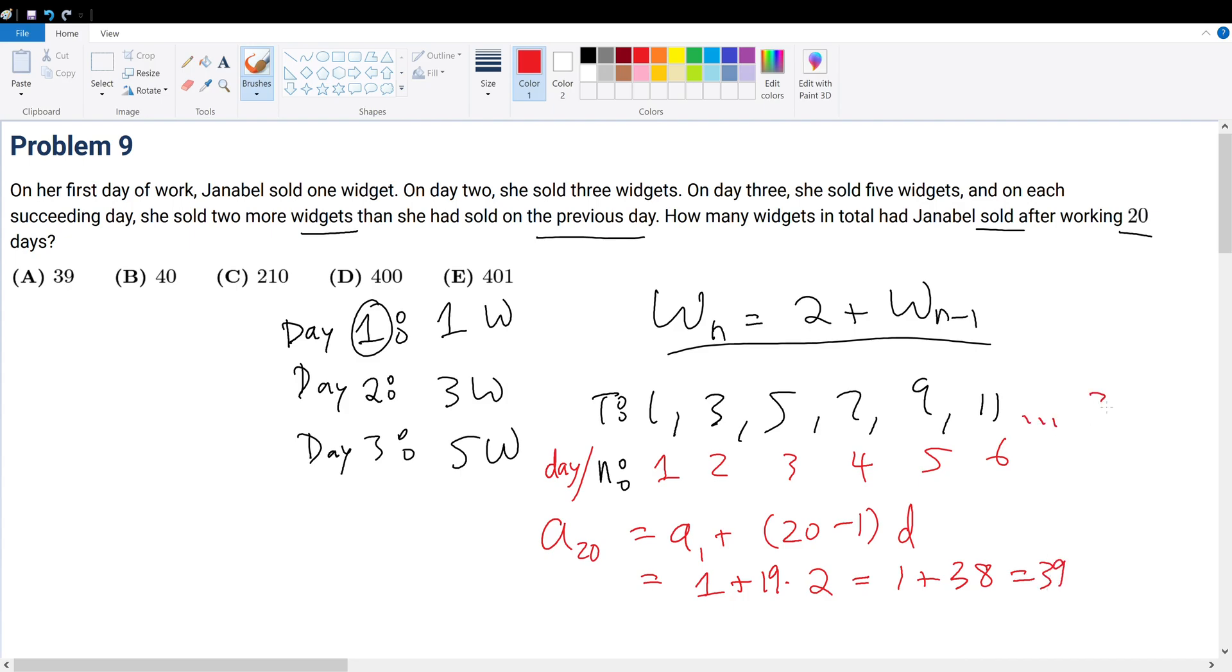This goes on until 39, and this goes on until number 20. How many widgets in total has she sold? We now have to sum all these terms up. Since it's an arithmetic series, we use the arithmetic series summation formula, which states the sum is the first term plus the last term times the number of terms divided by 2. First term is 1, last term is 39, times the number of terms, 20, divided by 2, which is 10 times 40, which gives 400.